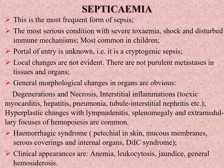Hemorrhagic syndrome occurs — petechial rash in skin, mucous membranes, serous coverings, and internal organs — disseminated intravascular coagulation syndrome. Clinical appearances are anemia, leukocytosis, jaundice, and general hemosiderosis.